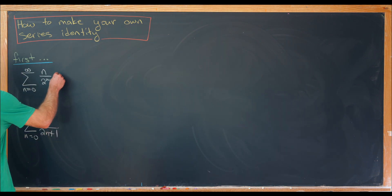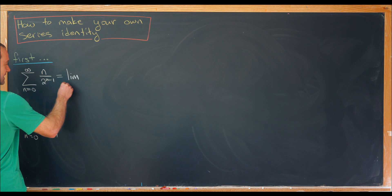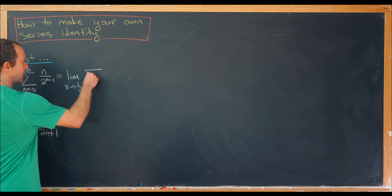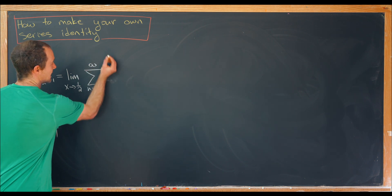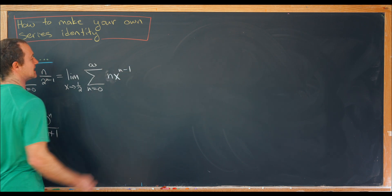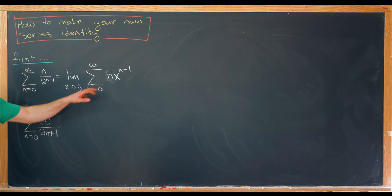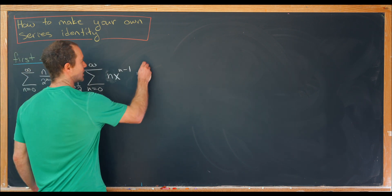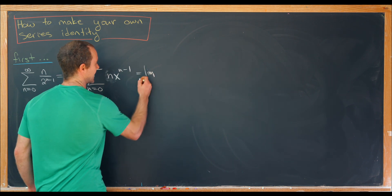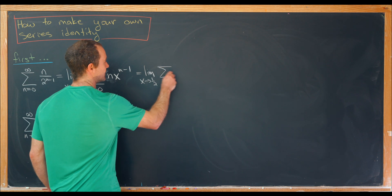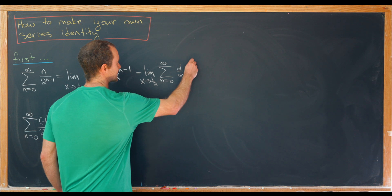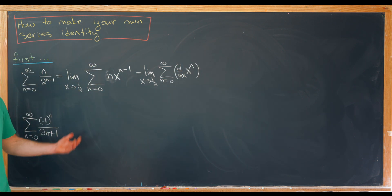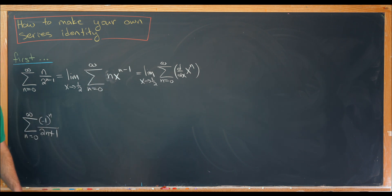Let's notice that the first series is equal to the limit as x approaches 1/2 of the sum as n goes from 0 to infinity of n times x to the n minus 1. Notice this looks like we've done term-by-term differentiation on a series. So we can rewrite this as the limit as x approaches 1/2 of the sum as n goes from 0 to infinity of the derivative with respect to x of x to the n.